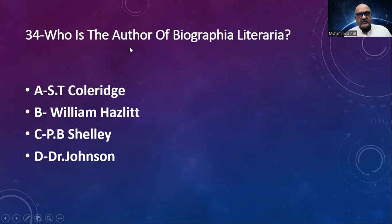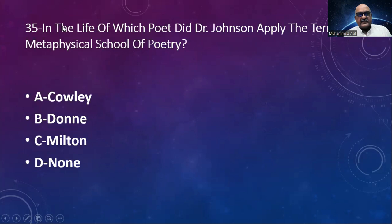Number 34: Who is the author of Biographia Literaria? Options: S.T. Coleridge, William Hazlitt, P.B. Shelley, Dr. Johnson. The answer is S.T. Coleridge. Number 35: In the life of which poet did Dr. Johnson apply the term 'metaphysical school of poetry'? Options: Coleridge, Donne, Milton, none. The answer is Donne — wait, the stated option is Cowley.